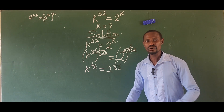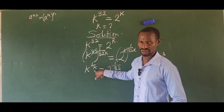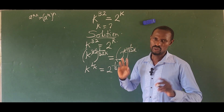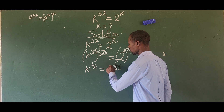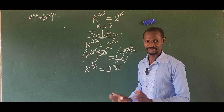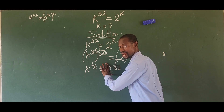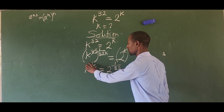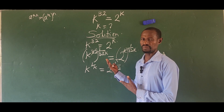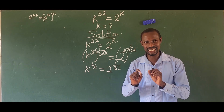Now here we want to strike a balance. We have k raised to 1 over k itself, and 2 raised to the power of 1 over 32k. What we want to do is bring in a number that we can place here, then multiply that same number by 32 to give the same result. In other words, we want a number that will appear in the exponent on the left, and that same number when multiplied by 32 gives us the denominator on the right. So we think of a number n such that 2 to the power of n equals 32 times n.